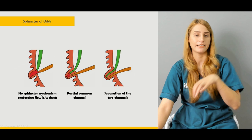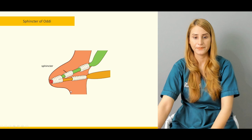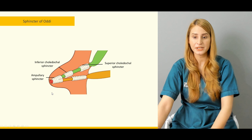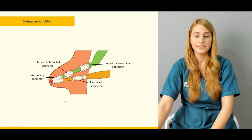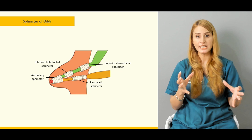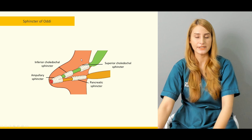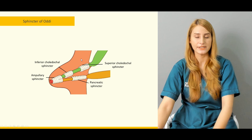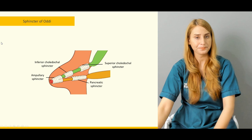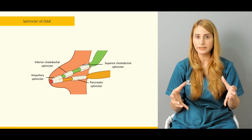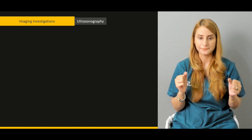Looking at the diagram, the four components of the sphincter of Oddi are: the superior choledochal sphincter (related to the CBD), the inferior choledochal sphincter, the ampullary sphincter (around the ampulla of Vater), and the pancreatic sphincter. These four sphincters combine to make the sphincter of Oddi. Variations include partial common channel, separate channels, or absence of a sphincter mechanism.